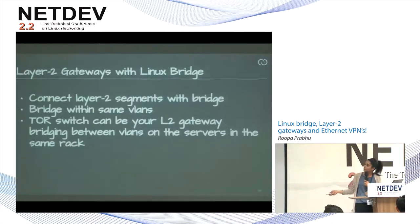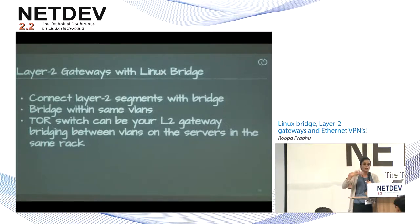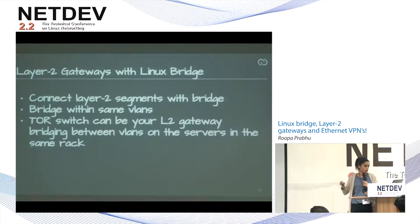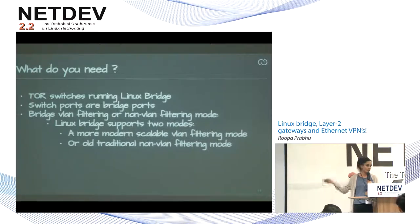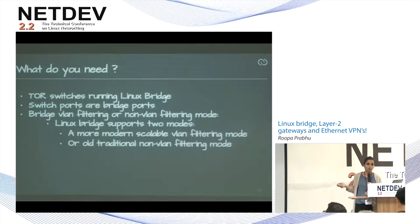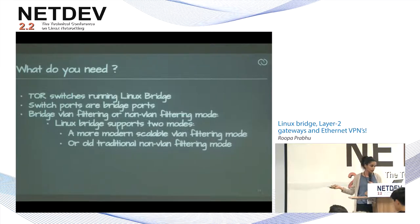Layer two gateways with Linux bridge: a rack of servers running VLANs with VMs communicating through the TOR switch, and your TOR switch becomes your layer two gateway. You bridge between VLANs and the servers in the same rack through your gateway switch. To build a layer two gateway with the Linux bridge, you just need a Linux bridge with switch ports. The bridge driver supports two modes: VLAN filtering and non-VLAN filtering. The VLAN filtering mode is more modern and more scalable.